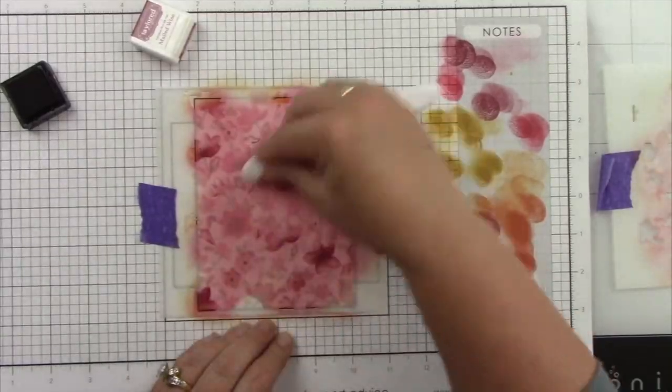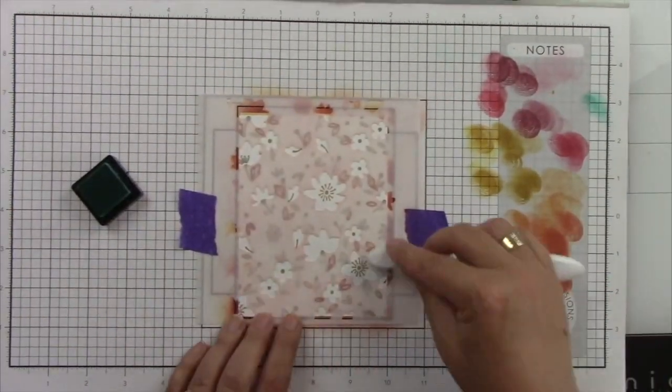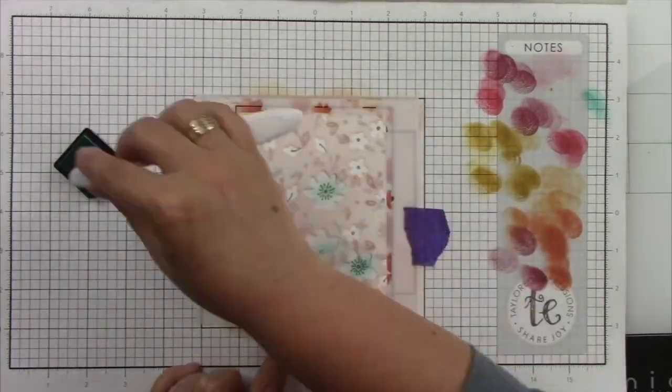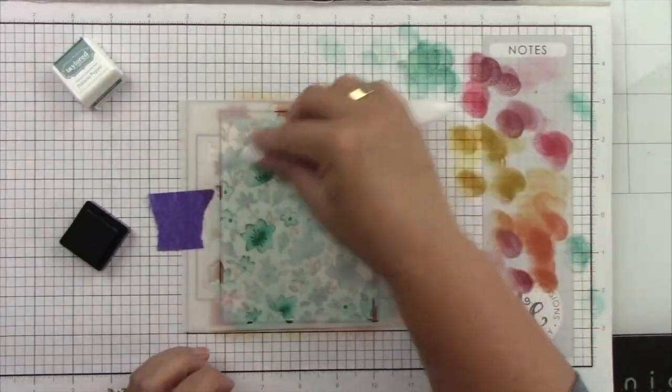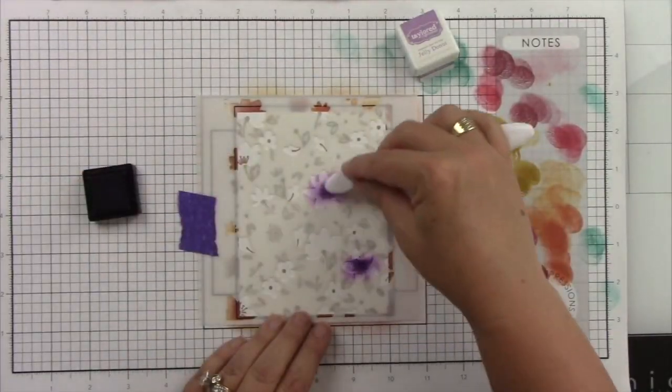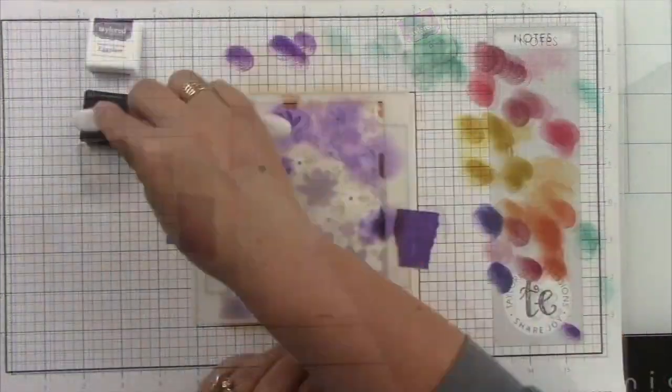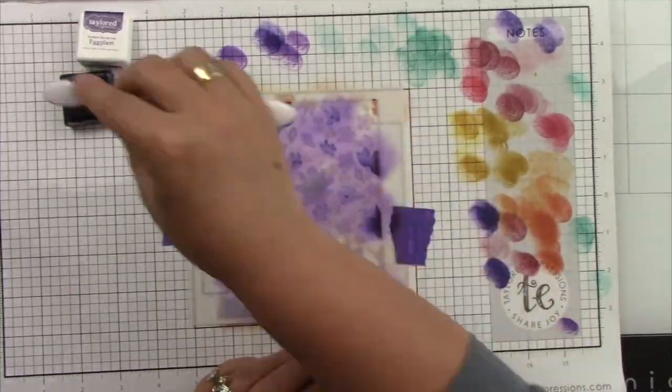Then my next set of colors are confetti cake and poblano pepper, which is absolutely stunning. Again, the first stencil I'm using confetti cake and then the second stencil I'm using poblano pepper. Then jelly donut and eggplant. Blending with my bitty blender brushes makes it so easy to blend these flowers beautifully.